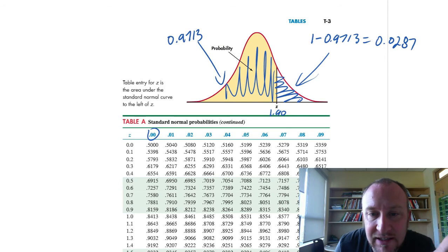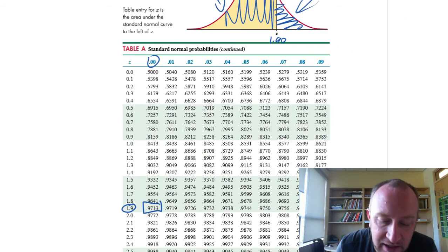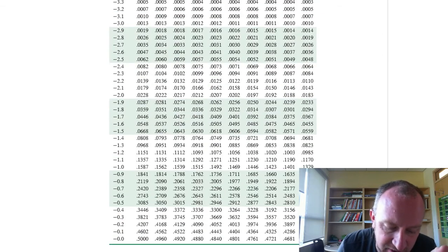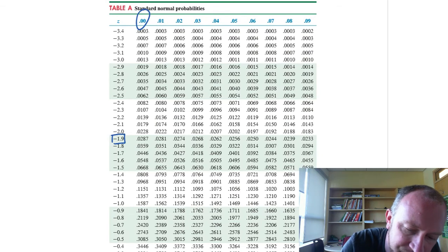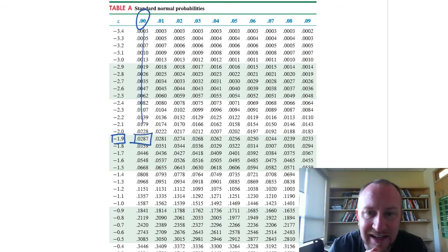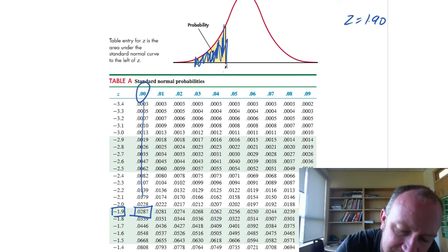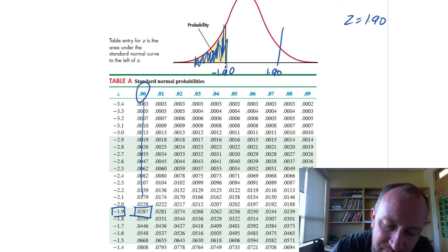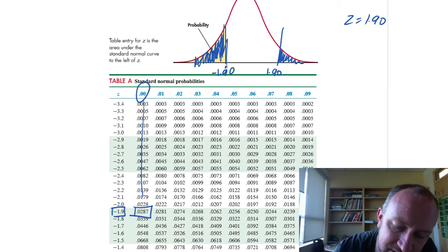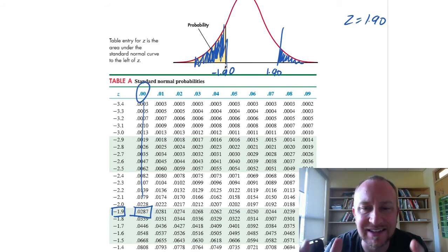Or again, we can take advantage of the symmetry of this distribution. If we look up the negative of our test statistic, here's negative 1.90, that gives us the same value, 0.0287. That's giving us this area to the left of negative 1.9. Even though our true test statistic is positive 1.9, this area here is going to be exactly equal to this area here. I'm only using this trick because this is how the tables happen to be designed.